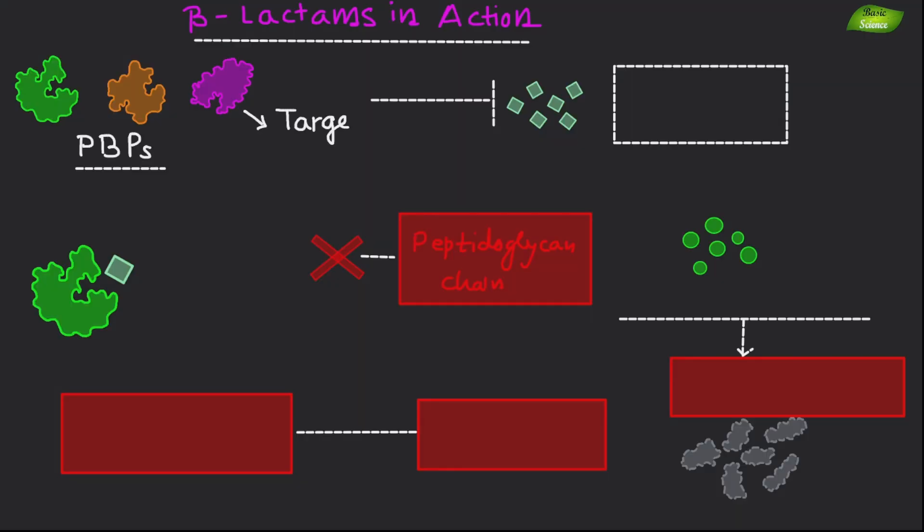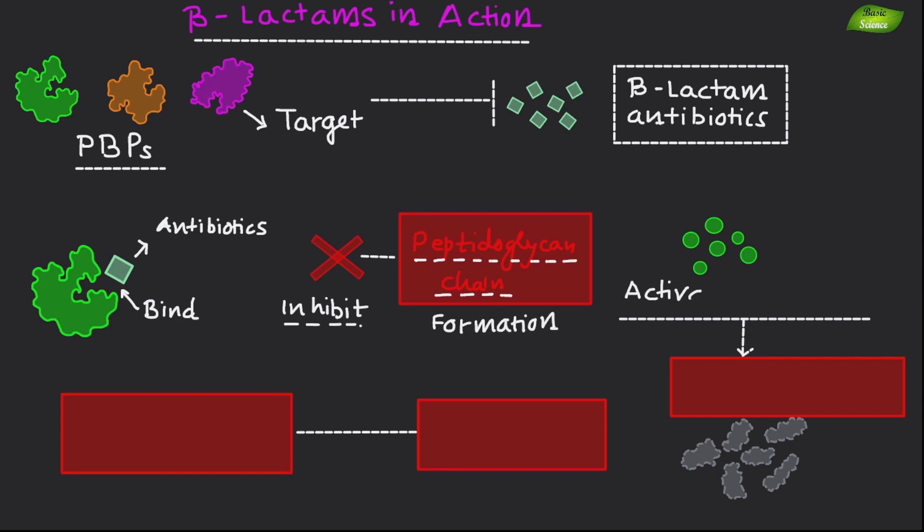PBPs are the target of beta-lactam antibiotics. When these antibiotics bind to PBPs, they inhibit the formation of peptidoglycan chains, activating autolysins that degrade the cell wall and lead to bacterial death. Therefore, beta-lactam antibiotics are known to be bacteriocidal.